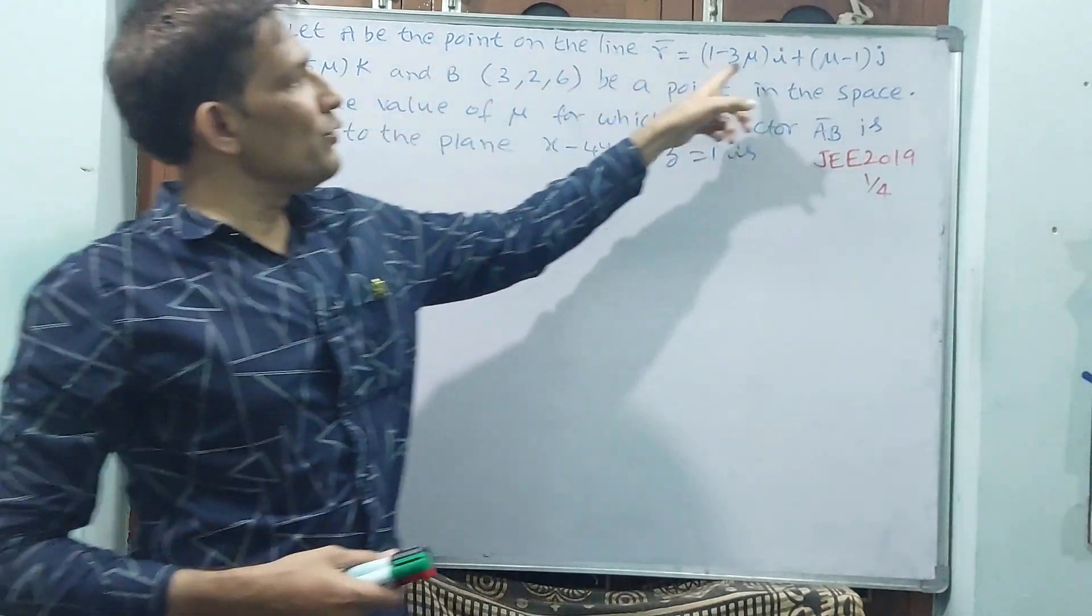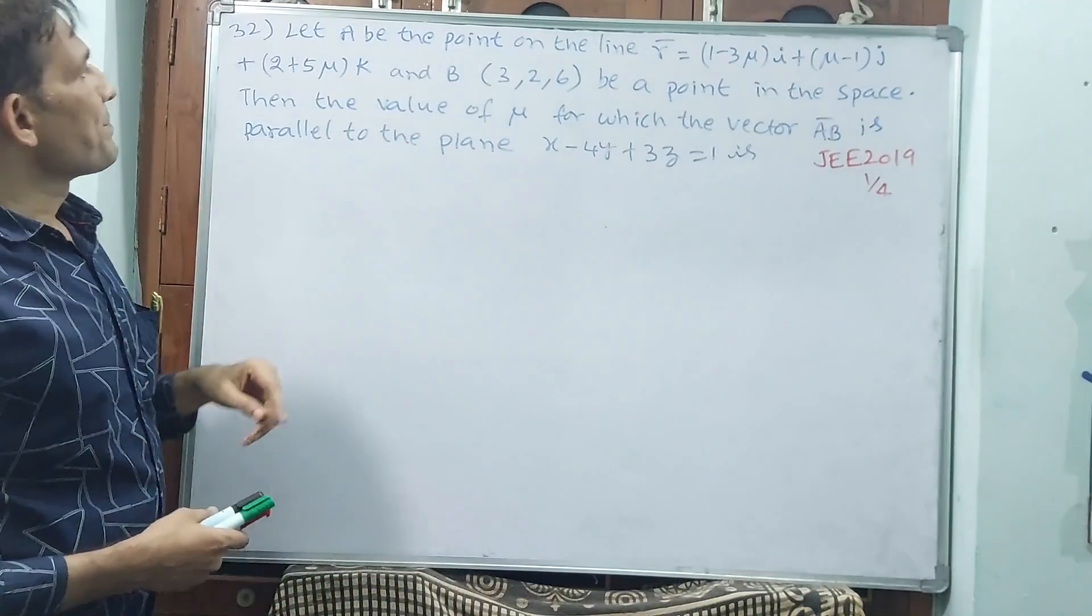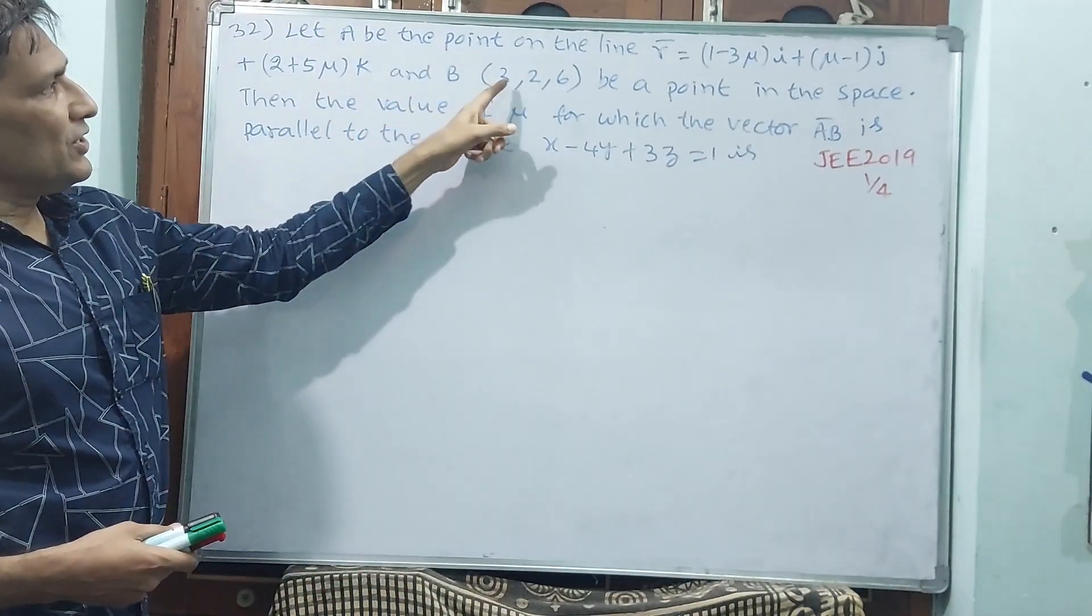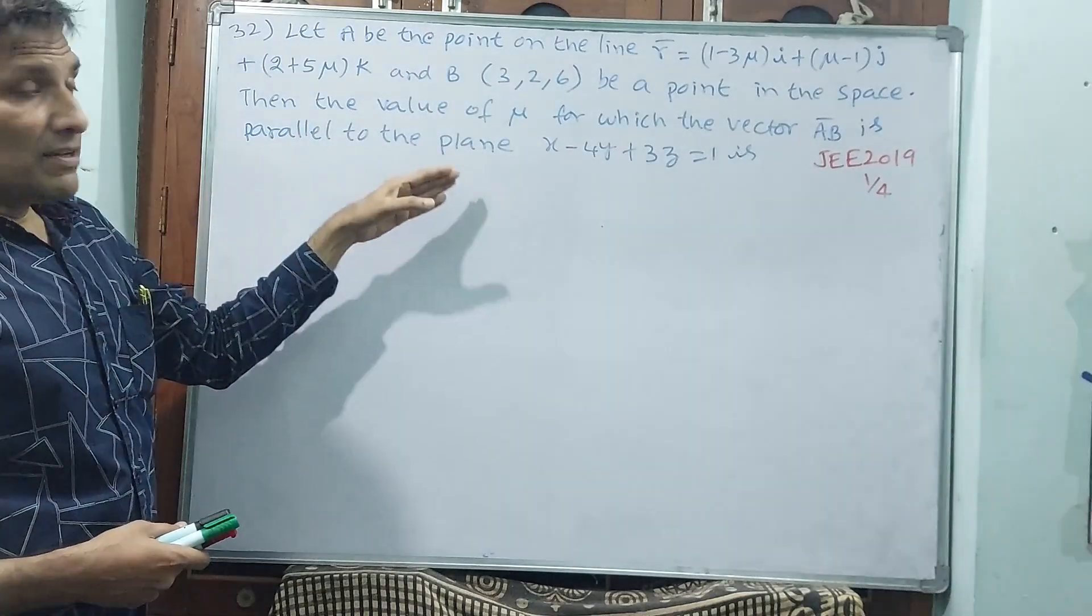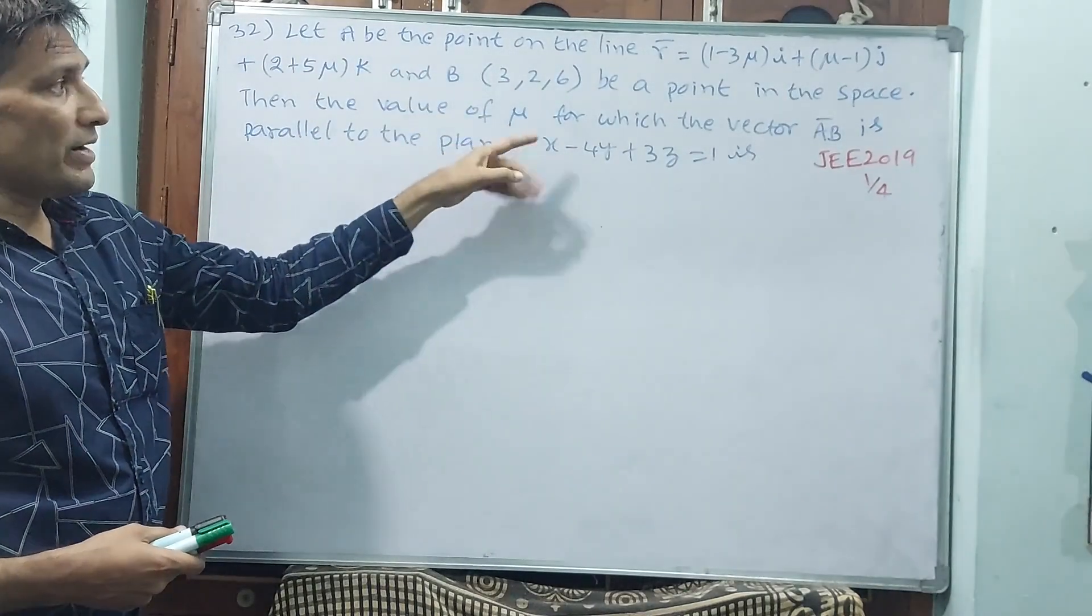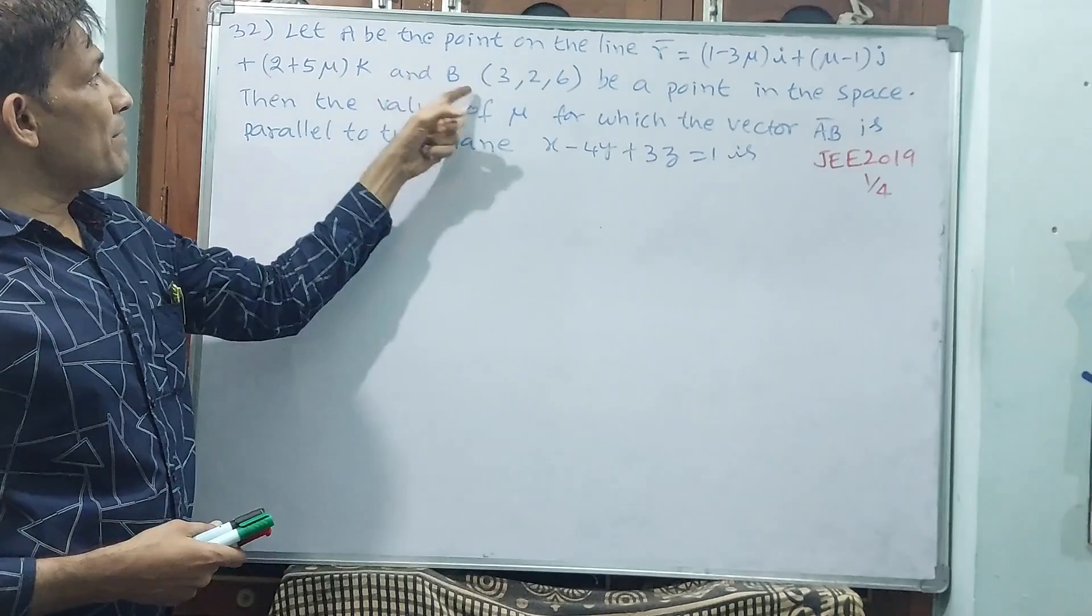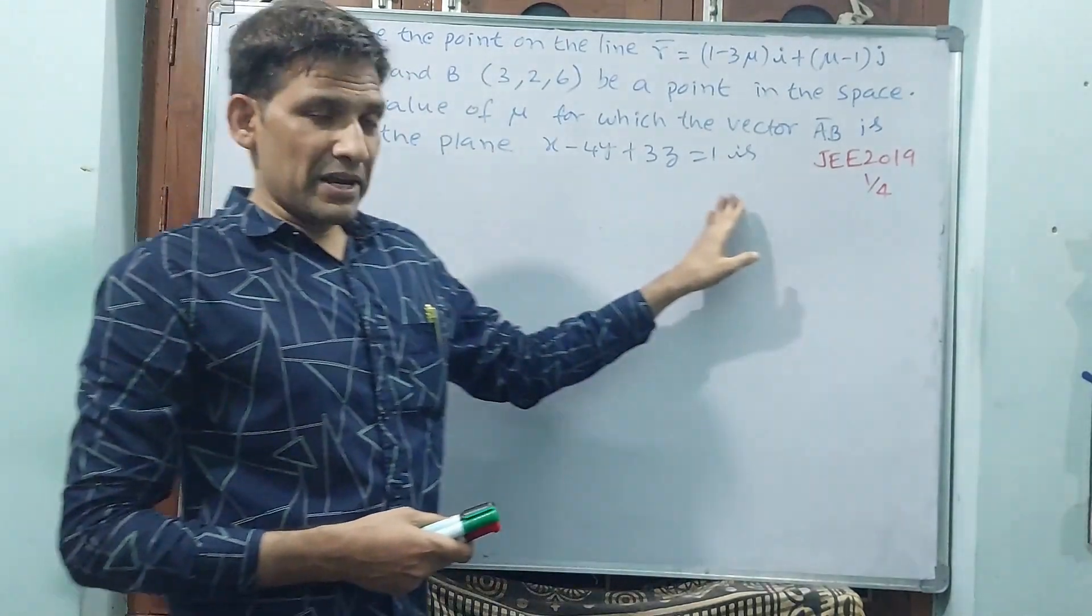See everywhere mu is there. And B is a point (3, 2, 6), B a point in the space. Then the value of μ you have to find for which the vector AB is parallel to this plane.